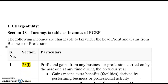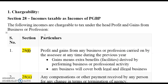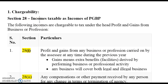The next important section is Section 28, which talks about chargeability. It provides a guideline on which incomes are taxable under PGBP. As per Section 28(1), profits and gains from any business or profession carried on by the assessee at any time during the previous year are chargeable to tax.